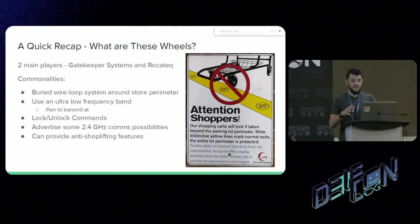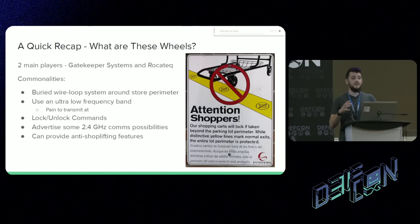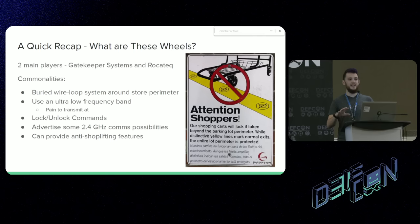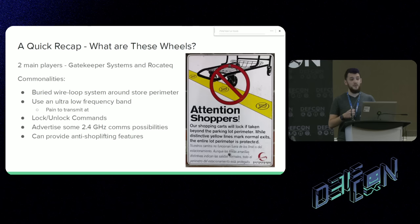There are two main players in this system: Gatekeeper Systems, which I've seen all across the country, and Rokatek, which is a smaller player I've only seen in one place. They have some major commonalities. The big one is a buried perimeter wire broadcasting a radio signal at a very low frequency — usually around 10 kilohertz. That's a big pain to transmit at. It's very similar to those invisible fence systems you'll see for dogs. They can receive lock and unlock commands at these ultra-low frequency bands, and some have capabilities of receiving commands at 2.4 gigahertz.